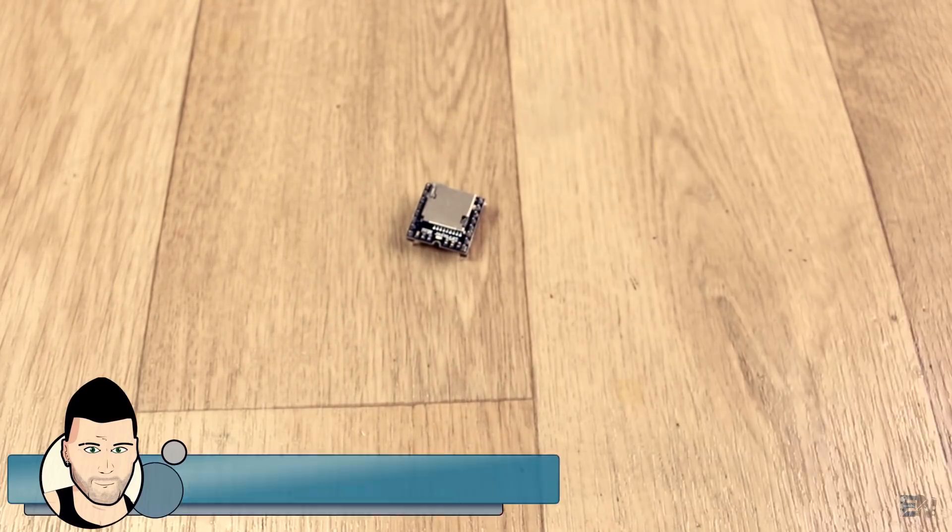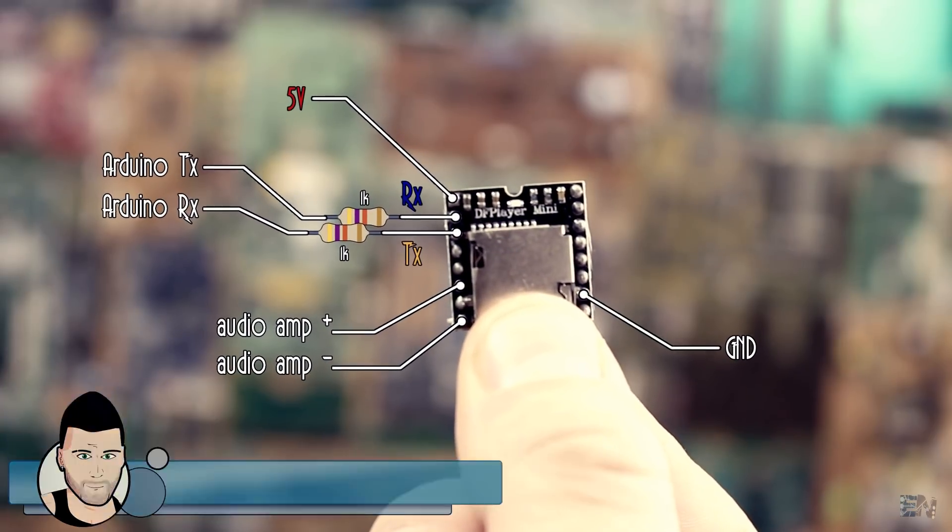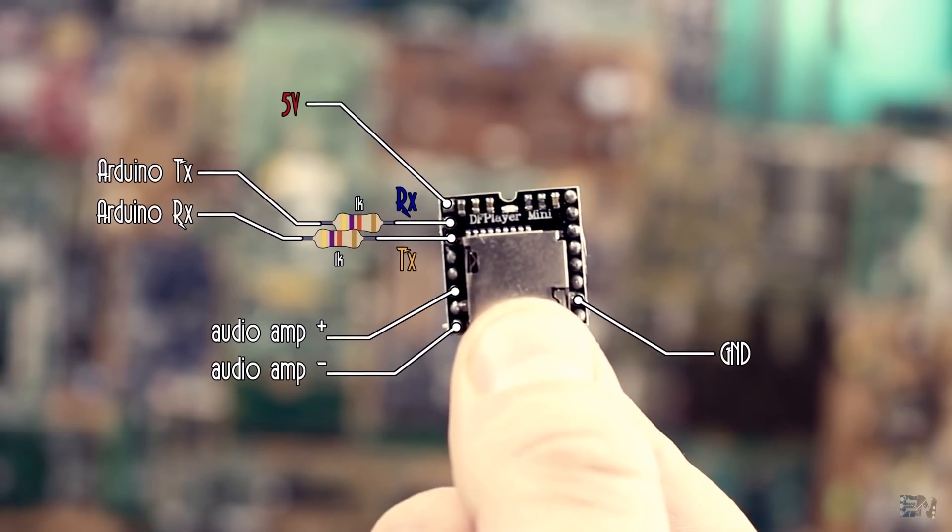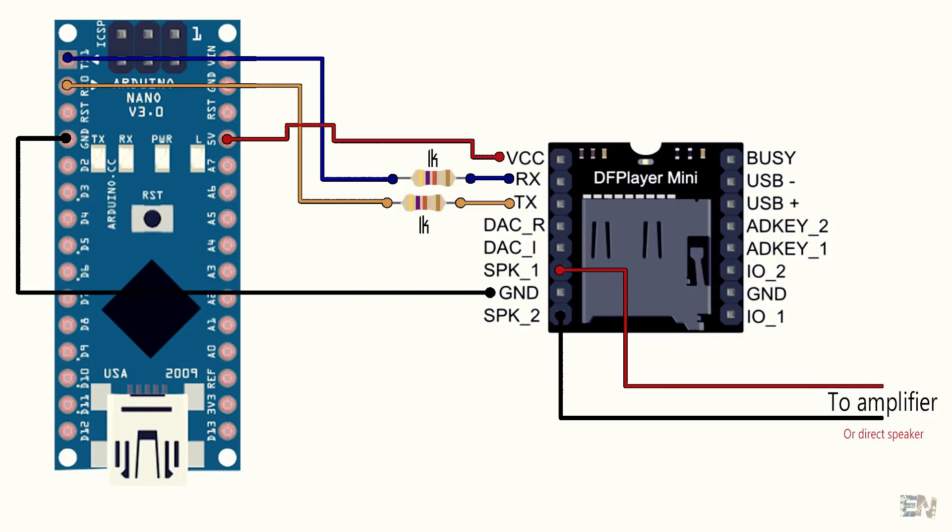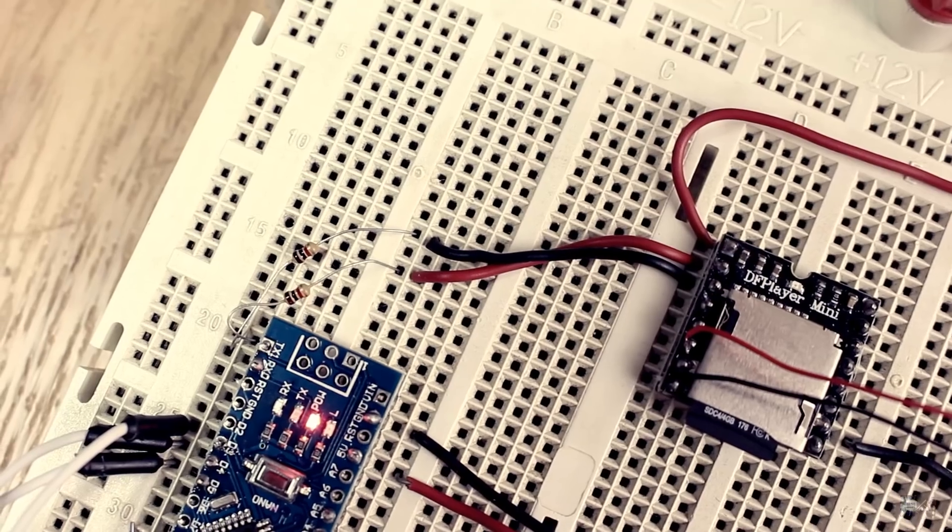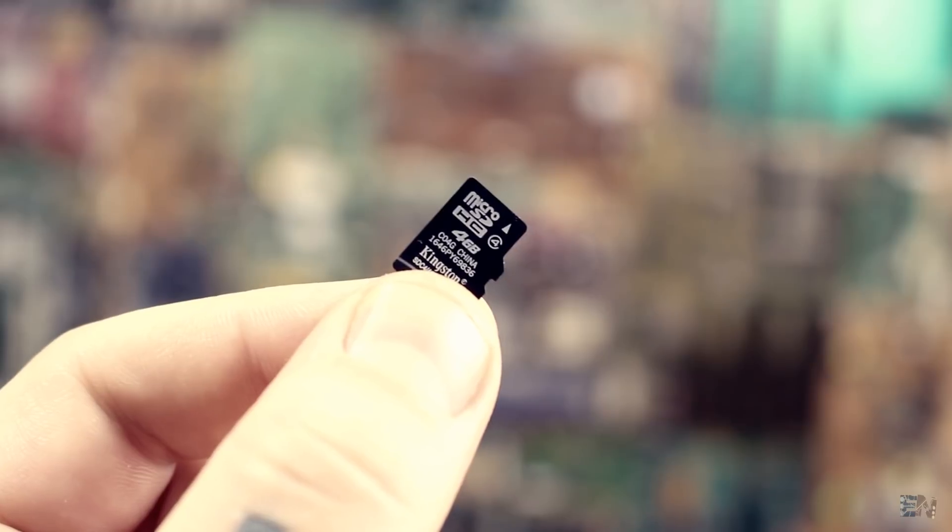This is the module that we will use and these are the connections that we will need. The speaker output, the serial communication and the power supply. We need to add a 1K resistor between the RX and TX serial communication pins of the Arduino and the module, because if not, we will have a hiss noise when playing the sound. I don't know why is that, but the 1K ohm resistor fixed the problem. So make sure you add those 2 resistors. We also need a micro SD card to store the mp3 files.